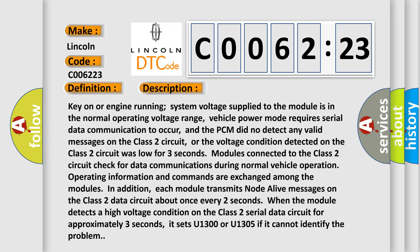Modules connected to the Class 2 circuit check for data communications during normal vehicle operation. Operating information and commands are exchanged among the modules. In addition, each module transmits no-to-live messages on the Class 2 data circuit about once every two seconds.